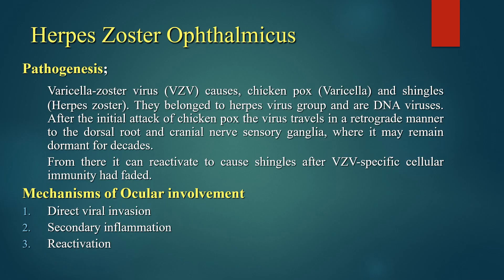Today we are going to discuss herpes zoster ophthalmicus. It is caused by varicella zoster virus, which causes chickenpox at its initial infection usually at a younger age, and then later on causes shingles, also called herpes zoster. They belong to the herpes virus group and are DNA viruses. After the initial attack of chickenpox, the virus travels in a retrograde manner to the dorsal root and cranial nerve sensory ganglia, where it may remain dormant for decades.